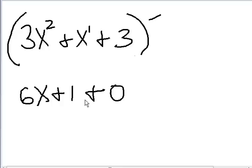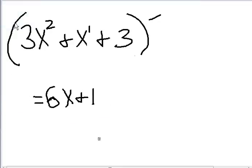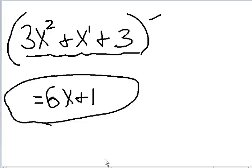So six x plus one plus zero. Well, one plus zero is one. Six x plus one equals six x plus one. And that is my answer. So the derivative of three x squared plus x plus three equals six x plus one.